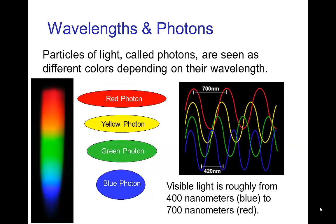The different wavelengths of light have associated with them particles which are called photons. The longest wavelengths we associate with red photons. Somewhat shorter would be yellow, then green, then blue. When we look at the spectrum, like we see here on the left, the longest wavelengths — the red photons — are on one end, and the shortest ones — the blue ones — are on the other end.